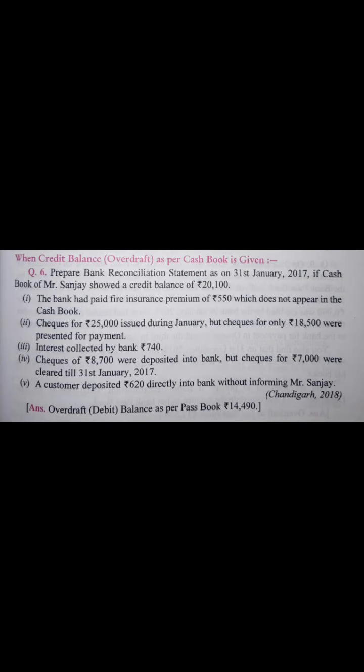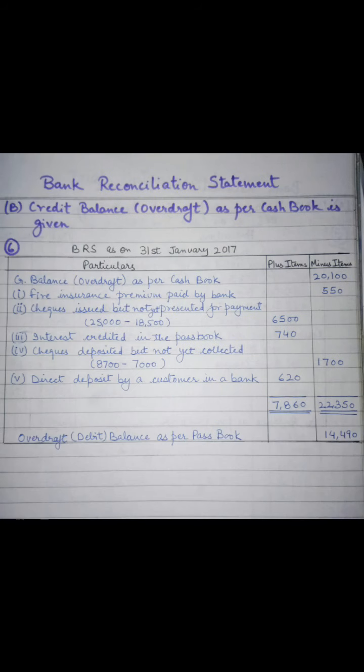The fifth and last entry: a customer deposited 620 rupees directly into the bank without informing Mr. Sanjay. Here the bank balance is more than the cash book balance, so we have to add this amount of 620 rupees. The entry is written as direct deposit by a customer in the bank, and 620 rupees is written in the plus item column.